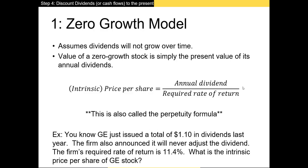In the zero growth model we assume that the current dividend or cash flow stays the same going forward. The most commonly used example is preferred stock, whose dividend doesn't change — the shareholder receives the same dividend every period. We calculate the intrinsic value per share by taking the dividend and dividing by the required rate of return. This formula is one of the most useful in finance and is called the perpetuity formula.